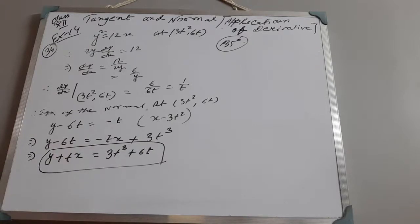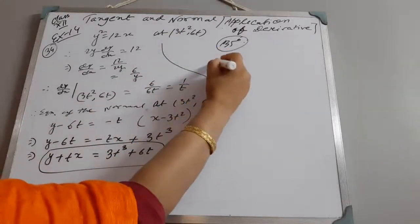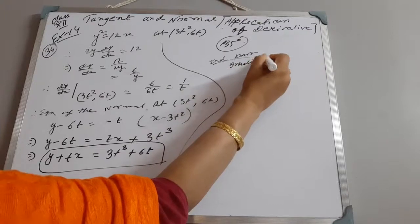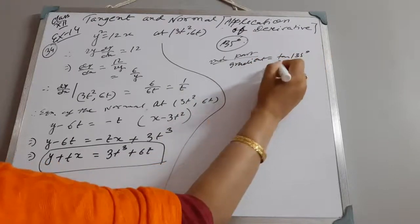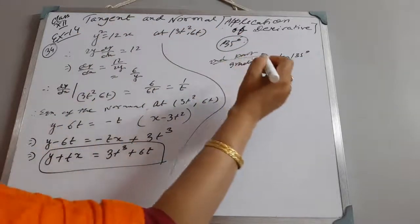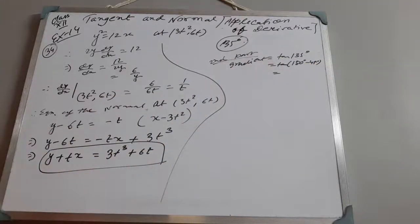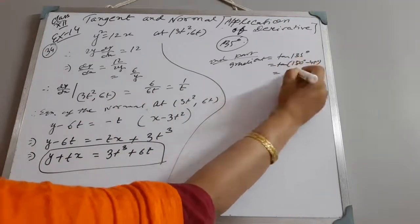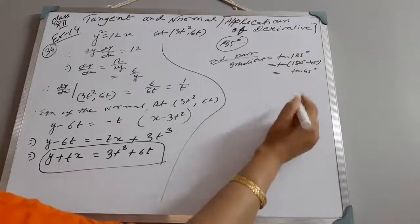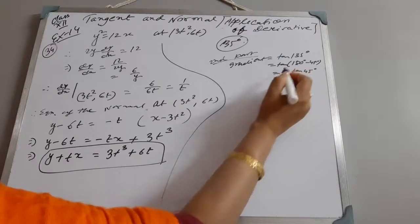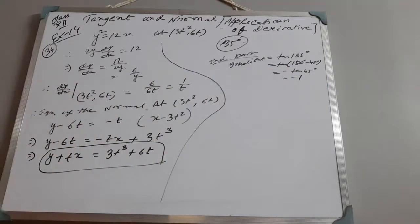Now for the second part: the normal makes an angle of 135° with the positive direction of the x-axis. The gradient of the normal will be tan(135°). We write tan(135°) = tan(180° − 45°), which is in the second quadrant where tan is negative. So it equals −tan(45°) = −1.